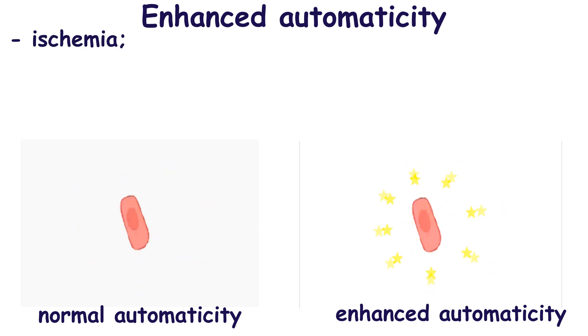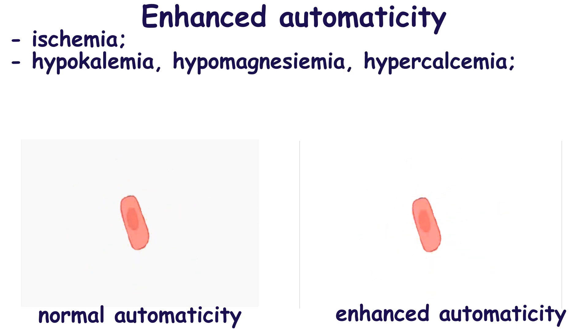In the case of ischemia, ATP depletion may result in enhanced automaticity. Electrolyte disorders such as hypokalemia, hypomagnesemia, hypercalcemia may also result in enhanced ability to fire.